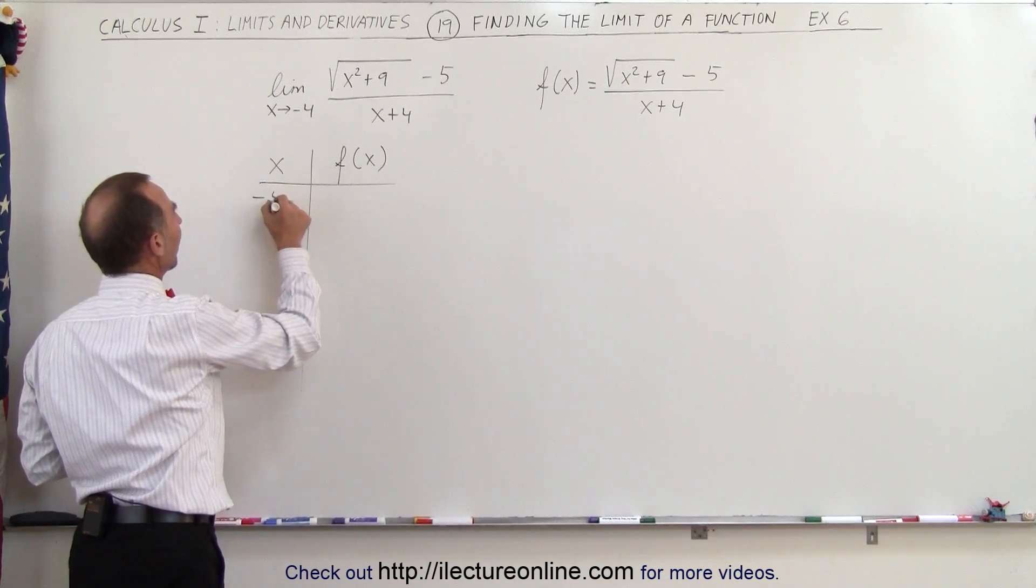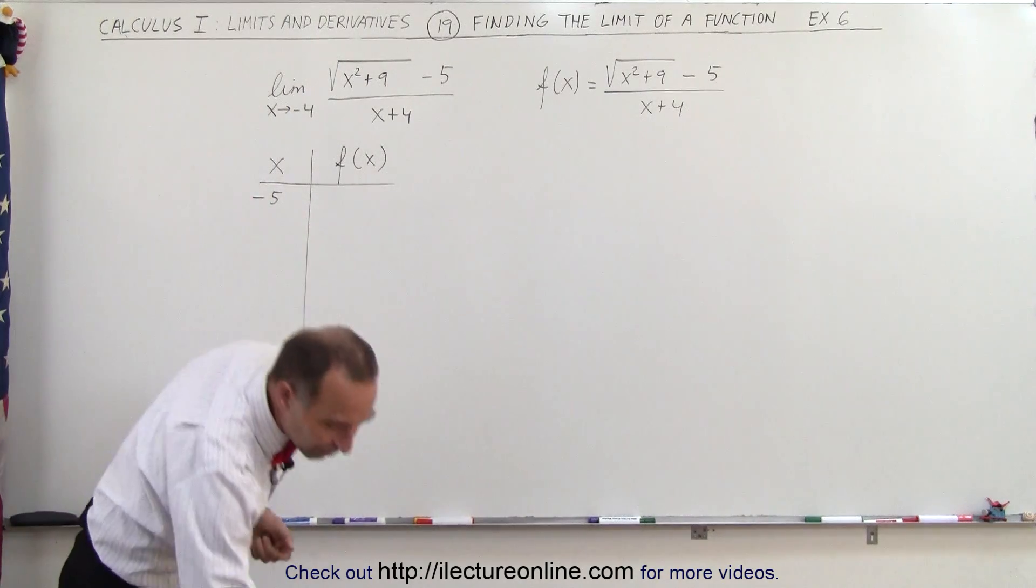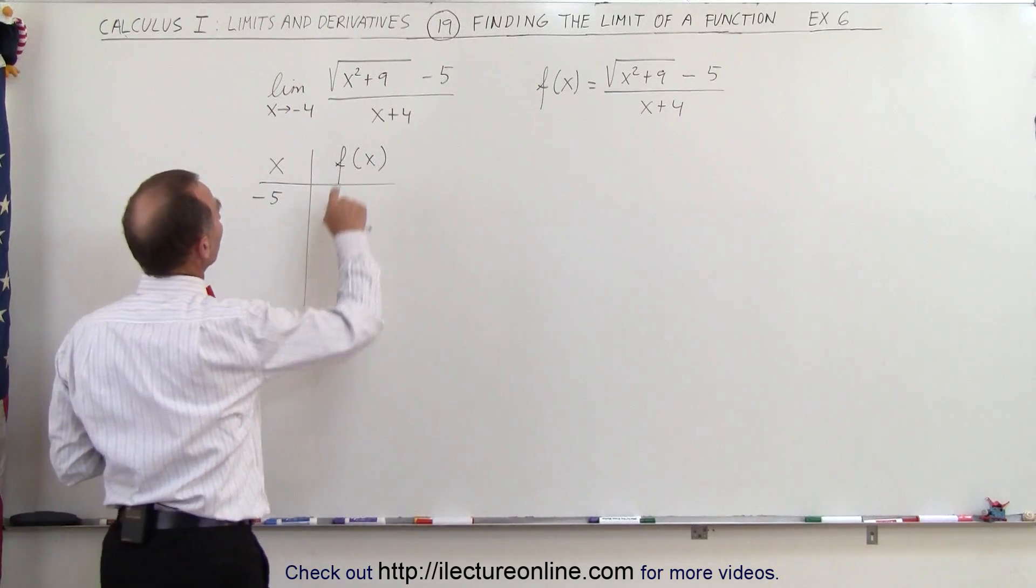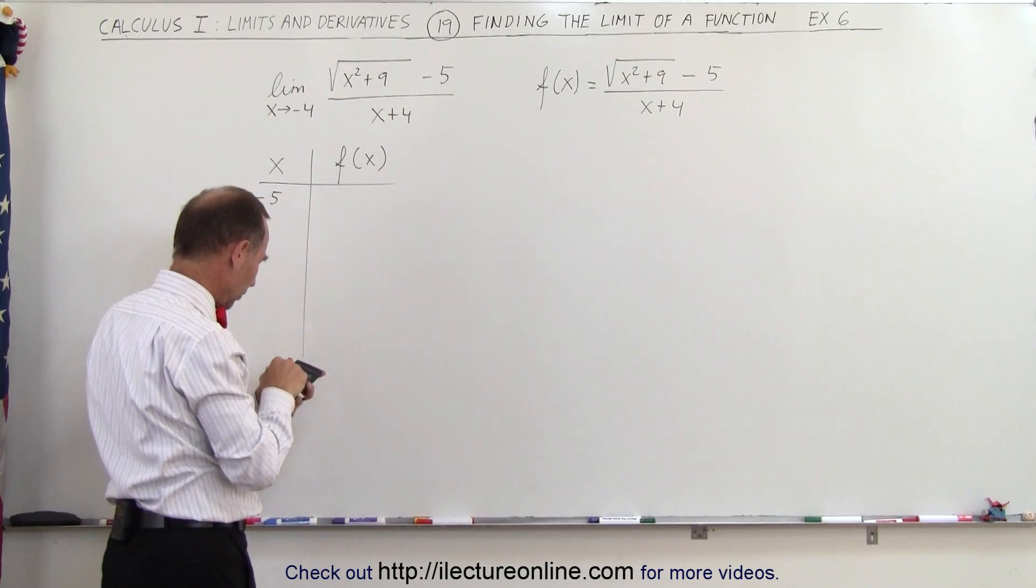And so let's start at minus 5, we'll approach it from the left. If x is minus 5, what would f of x be equal to? So minus 5 squared is 25 plus 9 is 34, so it's the square root of 34.